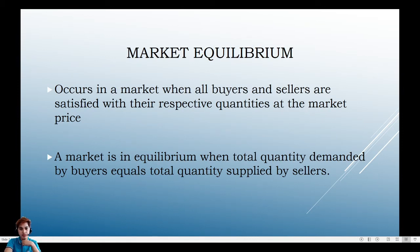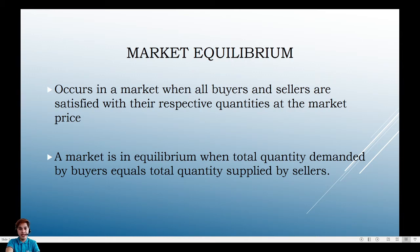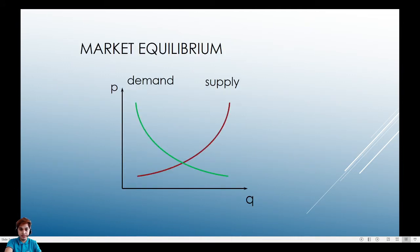Market equilibrium occurs in a market when all buyers and sellers agree on the price and the quantity in the market. In other words, we can achieve market equilibrium if your quantity demanded is equal to your quantity supplied.